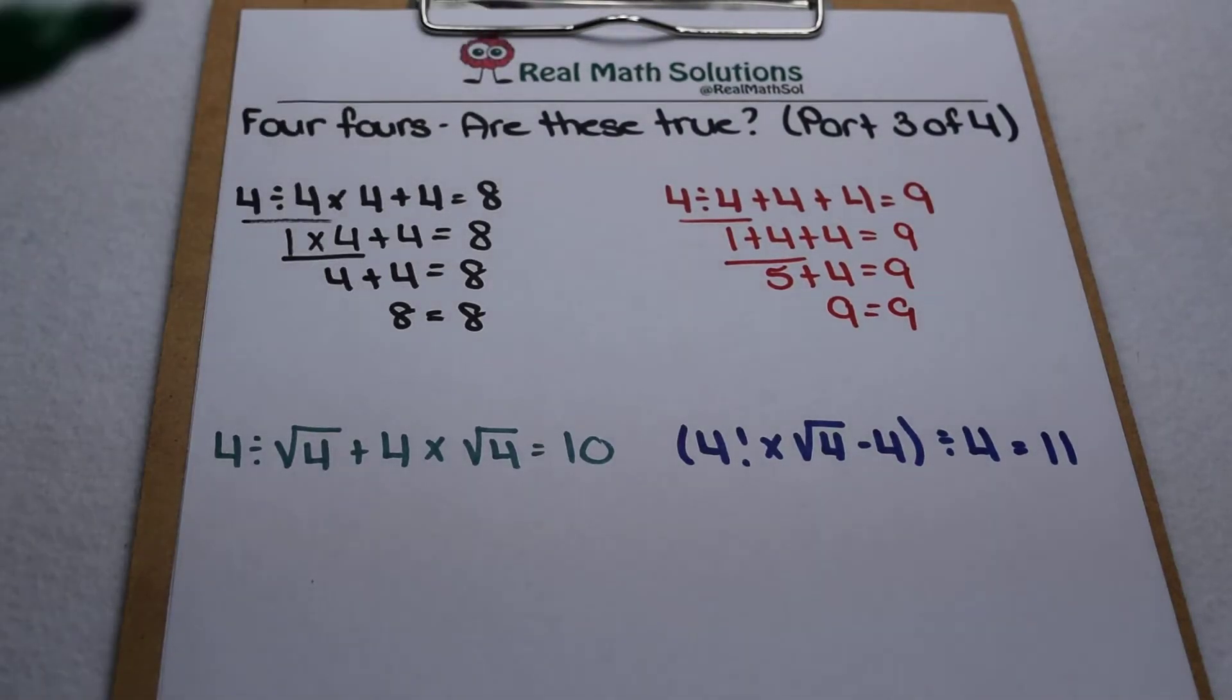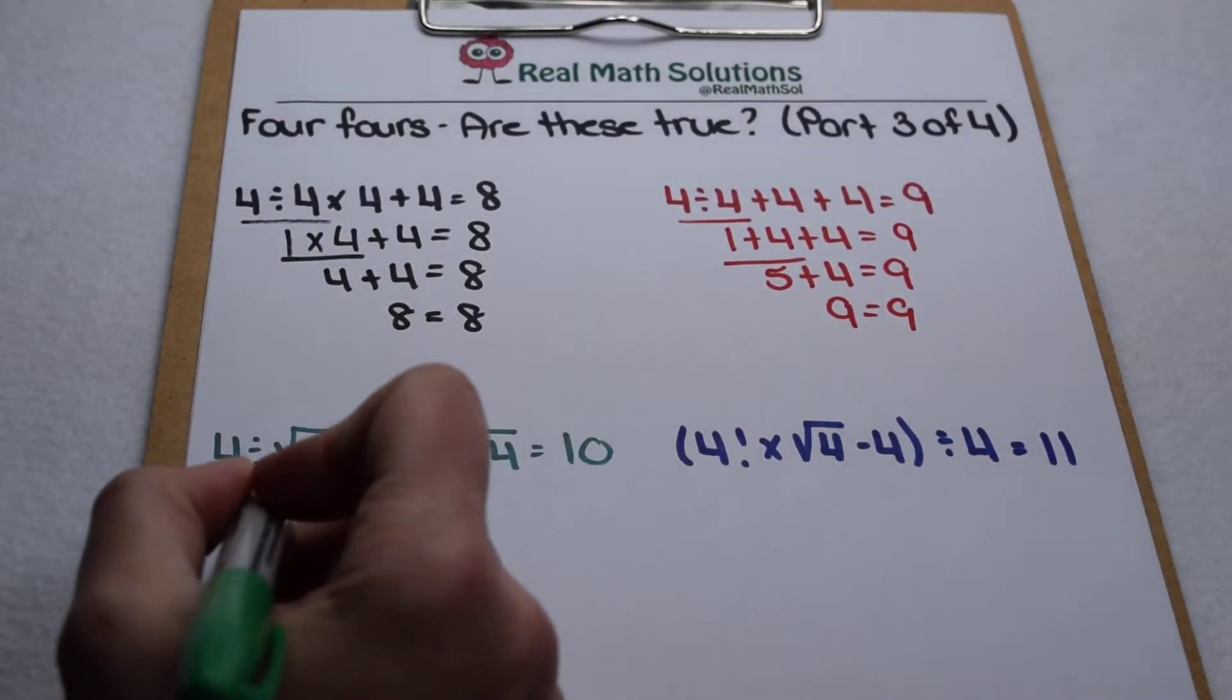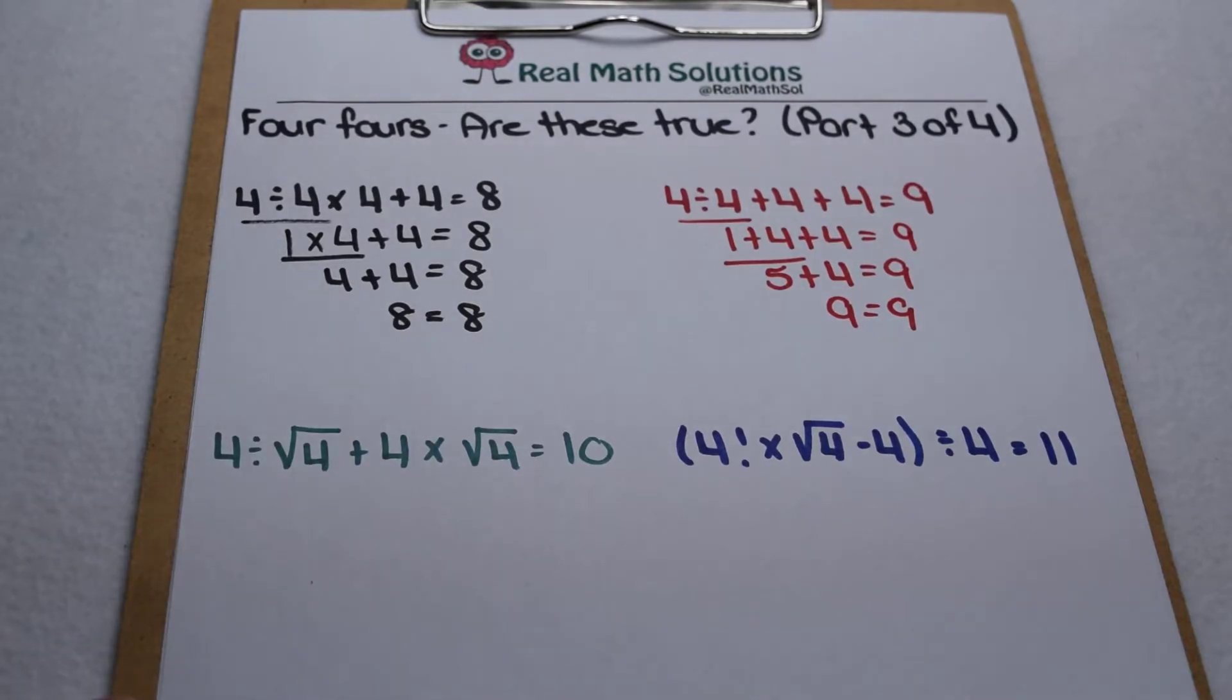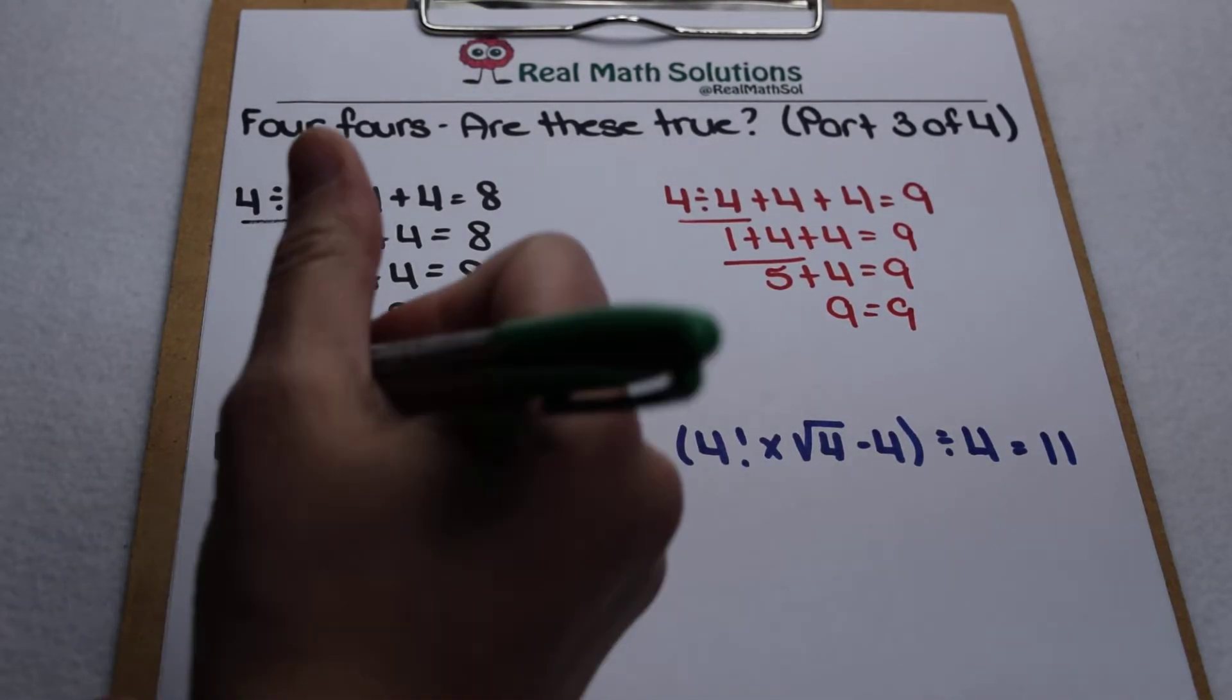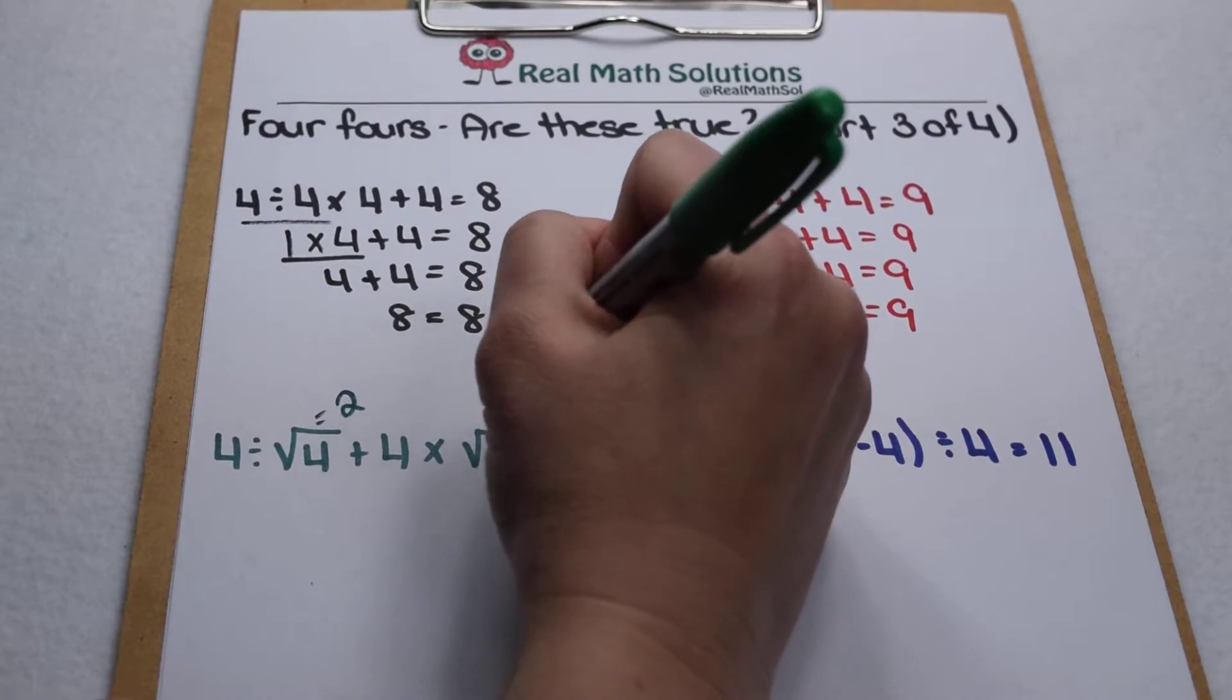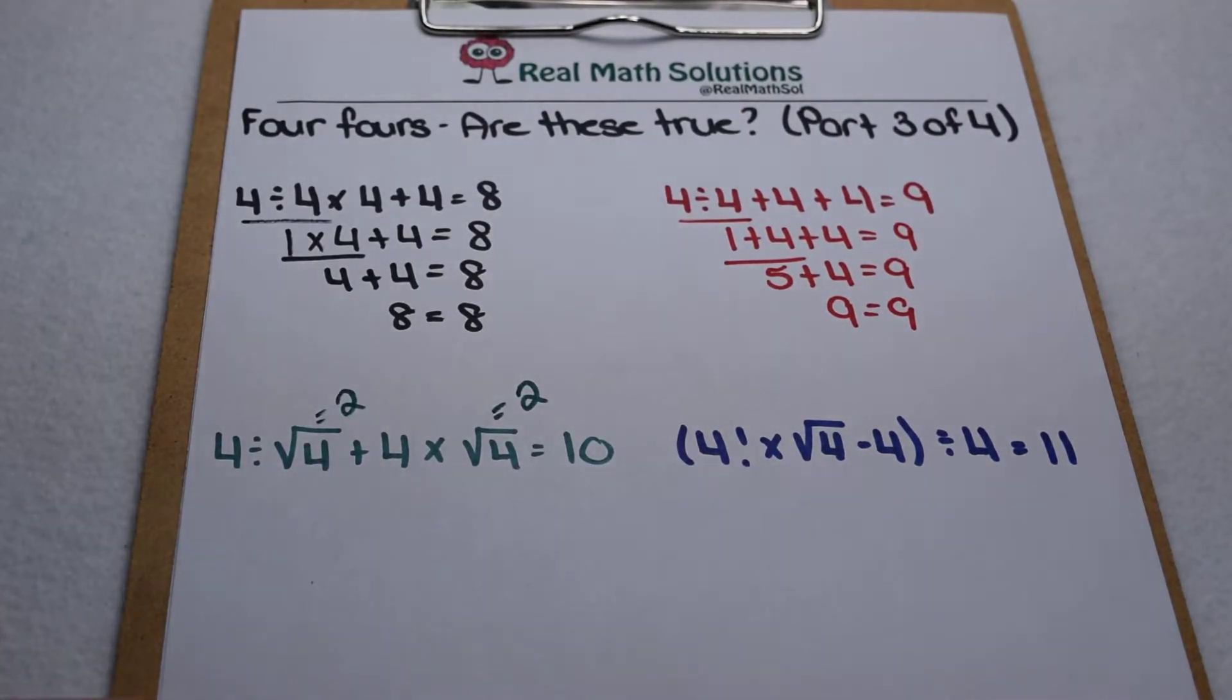Now when we get down here to 10, we've started to incorporate radicals. We have the square root of 4 in there. Well we have to evaluate that. The square root of 4 is worth 2. So as we solve our equation, we're going to treat the square root of 4 as 2, because that's what it's representing.